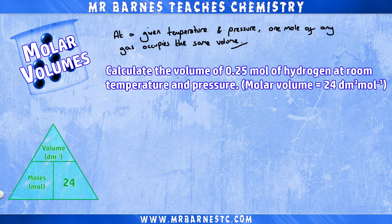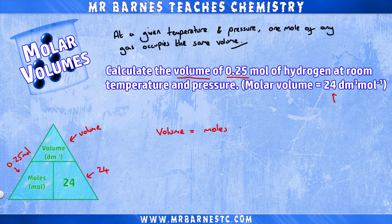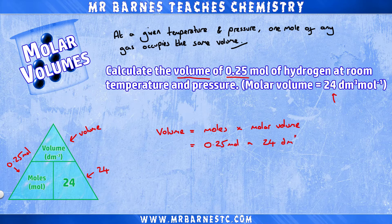So let's see what I mean. The question says: calculate the volume of 0.25 moles of hydrogen at room temperature and pressure, giving you the molar volume of 24 decimetres cubed per mole. From the triangle, volume is moles times molar volume, so 0.25 times 24 gives an answer of 6 decimetres cubed.